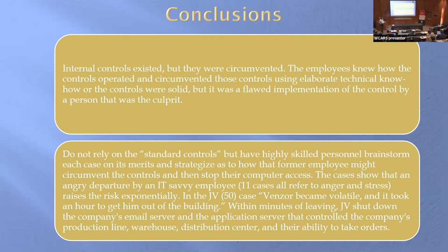This extract from the case: the vendor became volatile, and it took an hour to get him out of the building. When it takes you an hour to get the person out of the building, they are very angry. Within minutes of leaving, he shut down the email server and the application server — they controlled the company's product, warehouse, distribution center, and the ability to take orders.